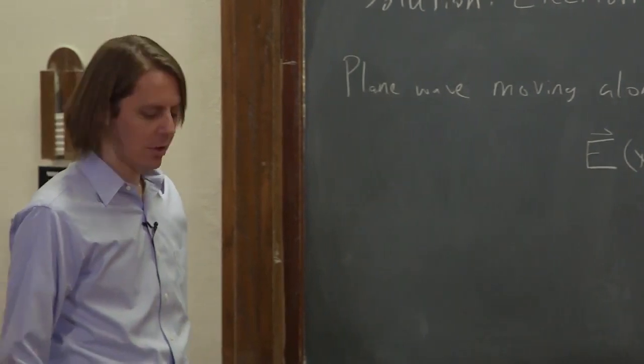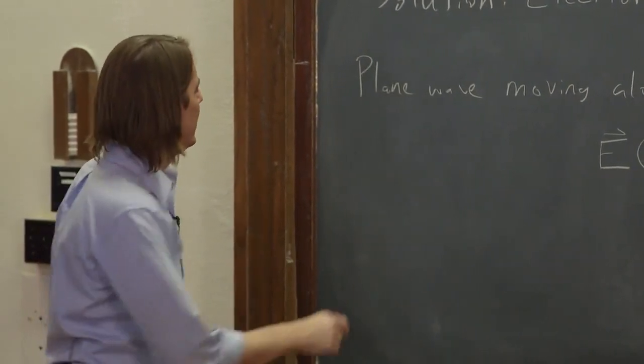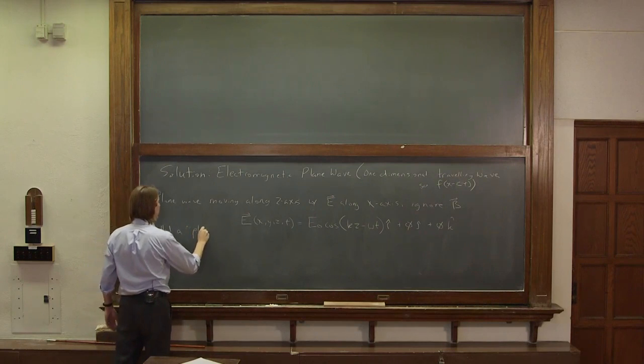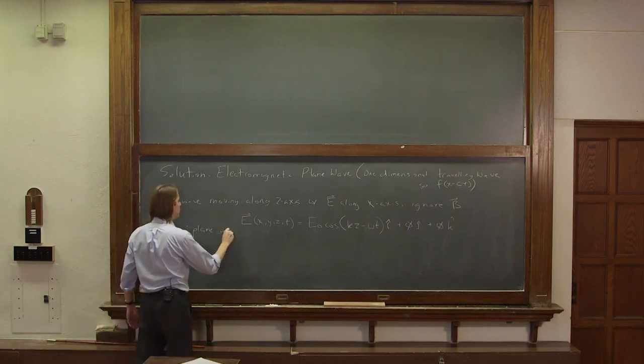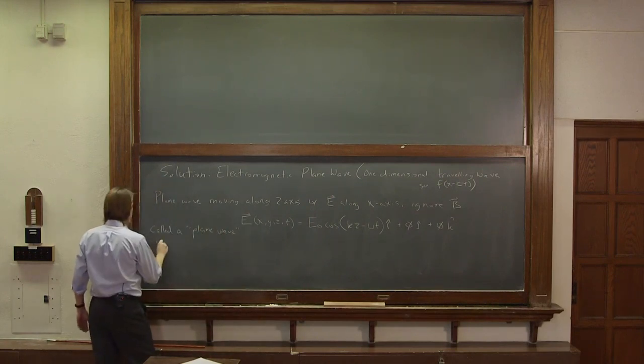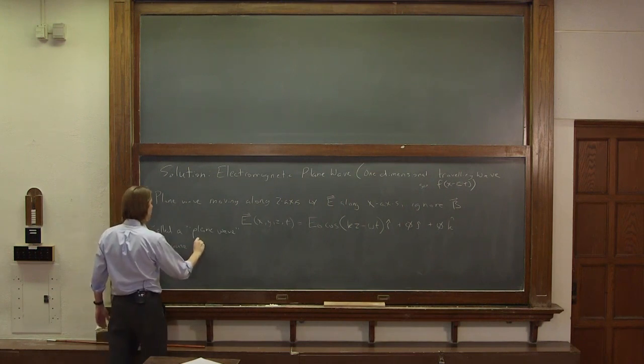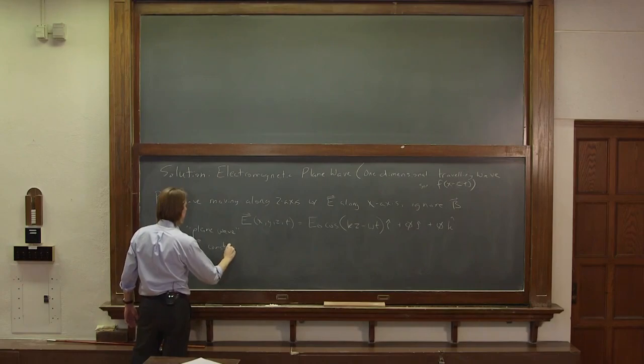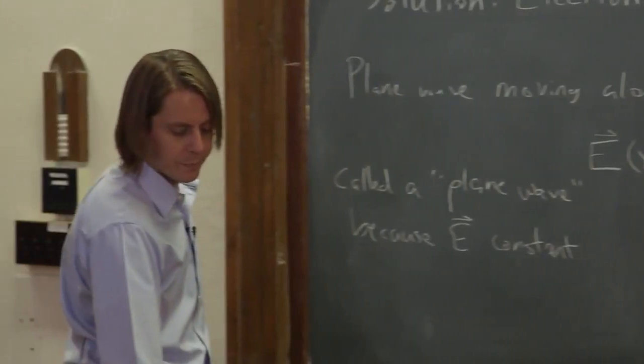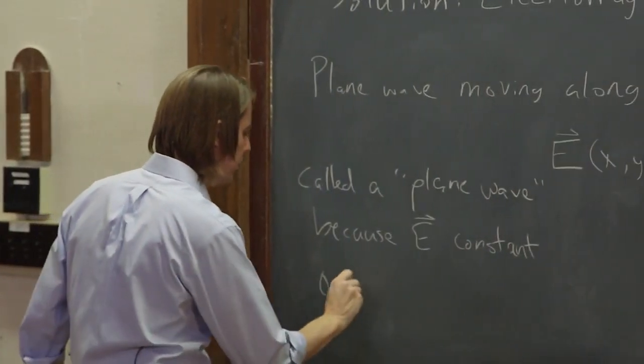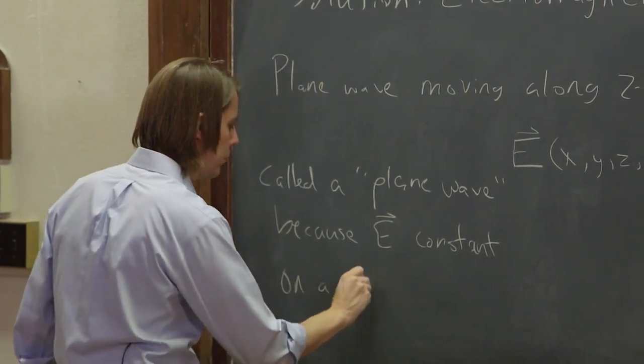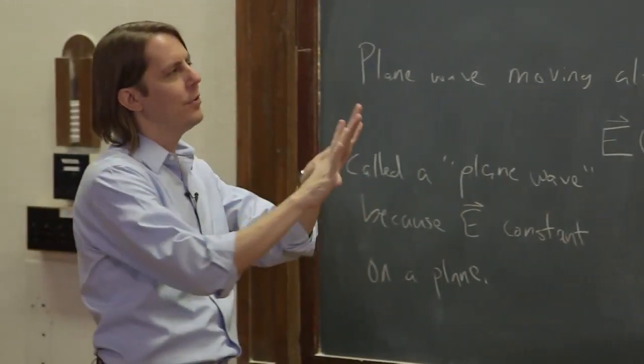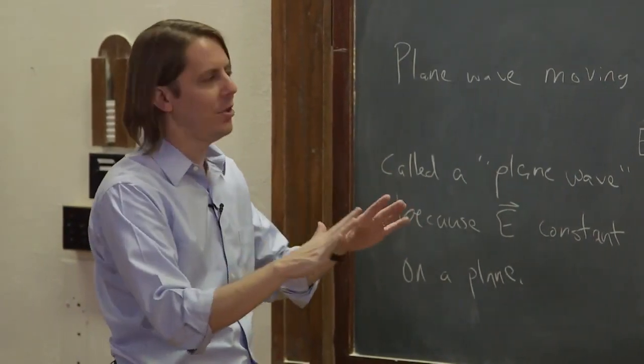So that's how you would write the plane wave. So it's called a plane wave because the e-field is constant on a plane. So the place where the e-field is constant is called a phase front.